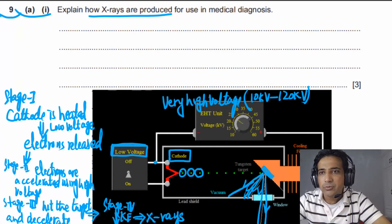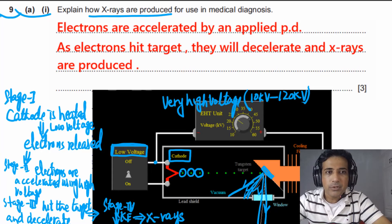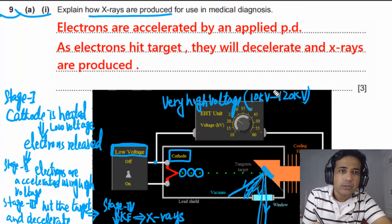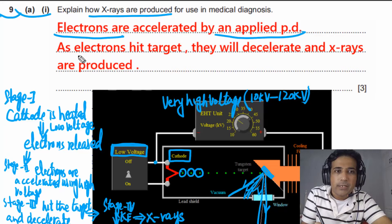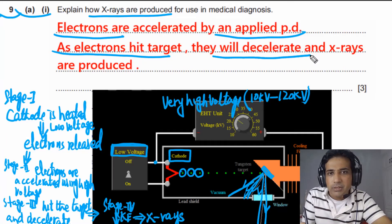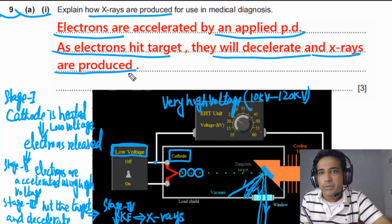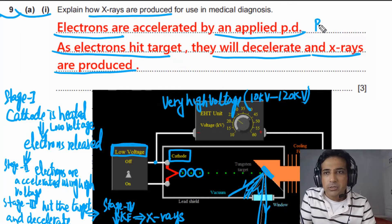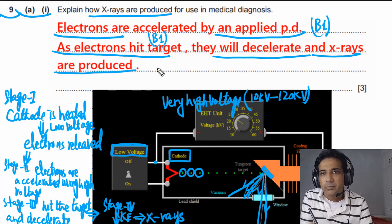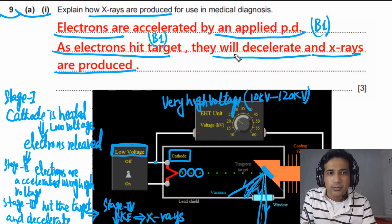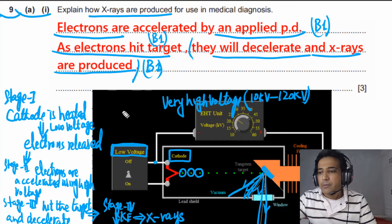The mark scheme awards marks as follows: one mark for stating electrons are accelerated by an applied potential difference; one mark for electrons hitting the target and decelerating; and one mark for X-rays being produced when electrons decelerate.